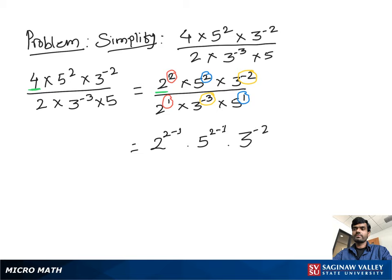That gives positive 3. So 3 to the negative 2 plus 3: we get 2 to the positive 1 times 5 to the positive 1 times 3 to the positive 1. Since 2 times 5 times 3 is 30, the answer is 30.